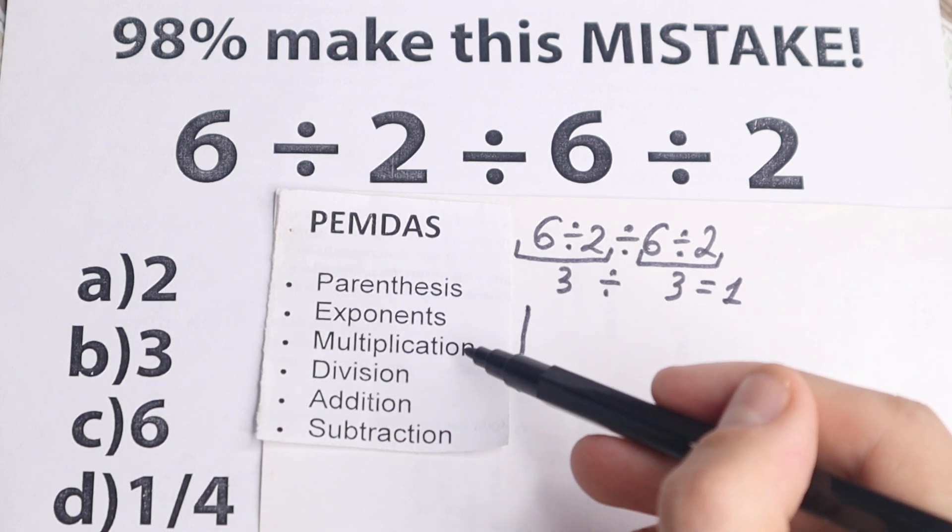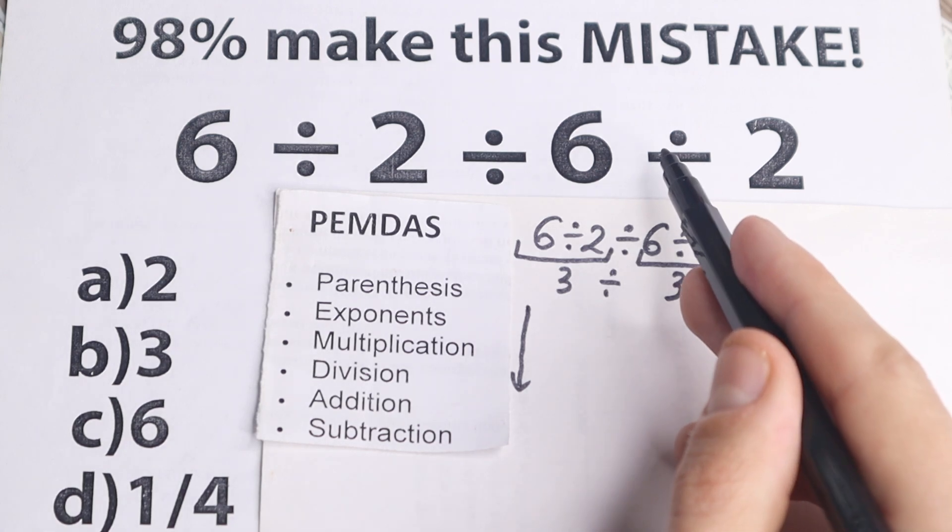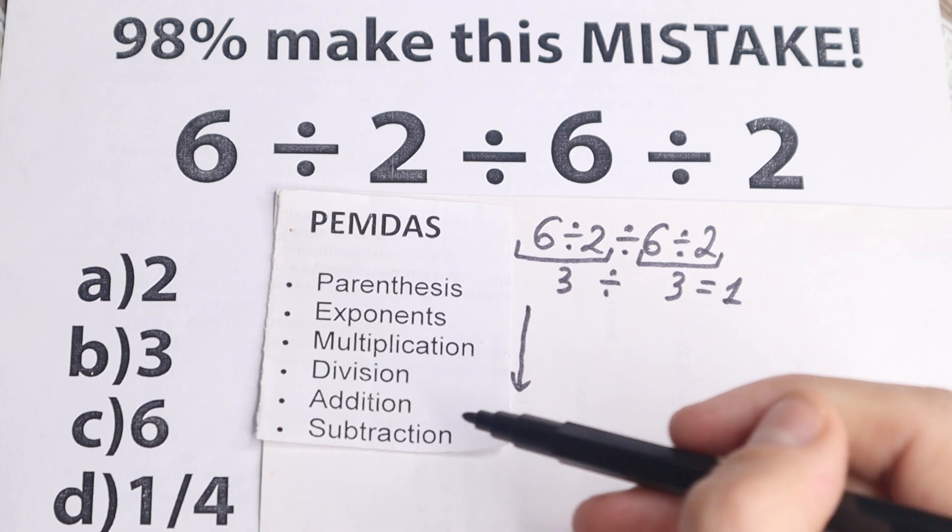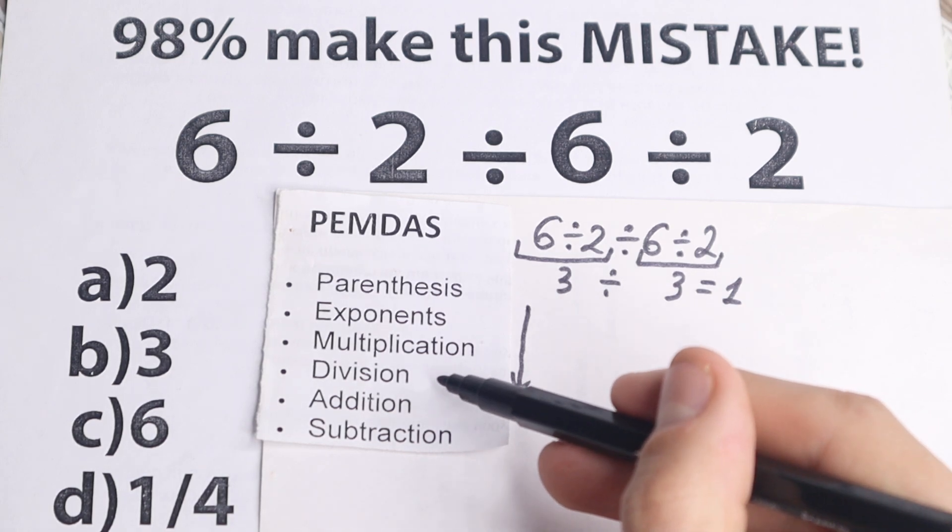The third and fourth step, multiplication and division as one group. So right here we don't have any multiplication sign, we have division, so this is our case. And moreover we don't have addition and subtraction, so this is only division case.